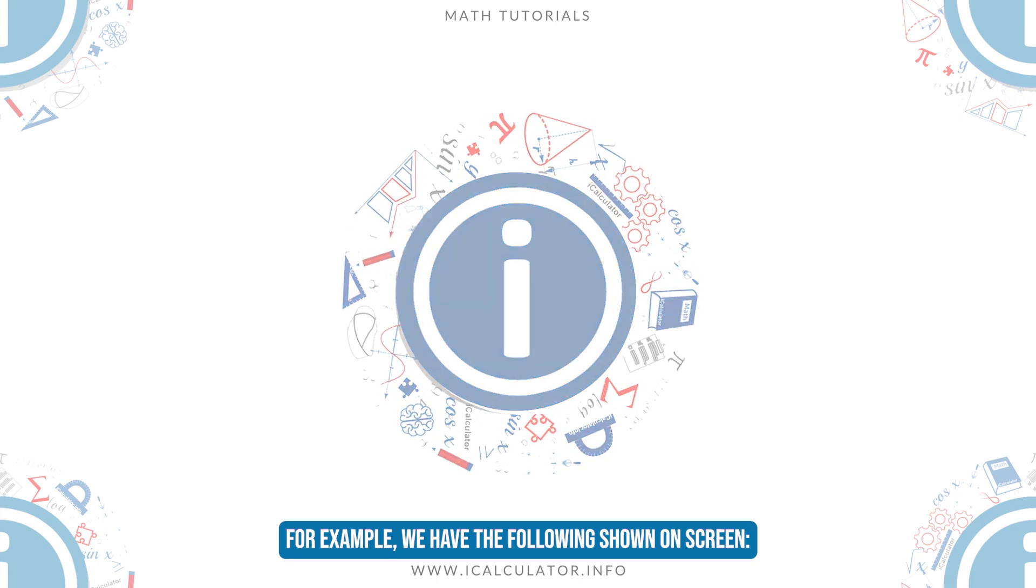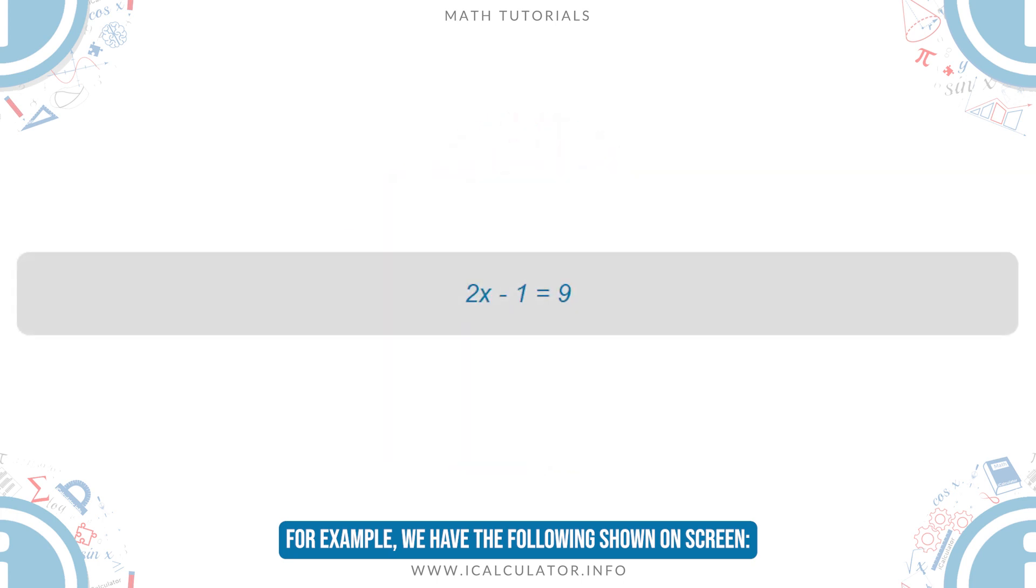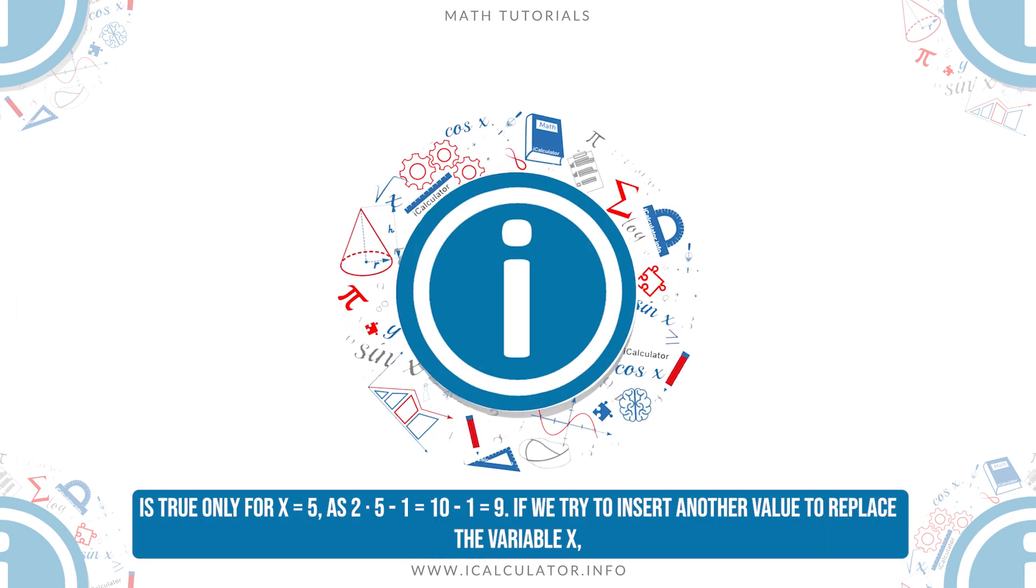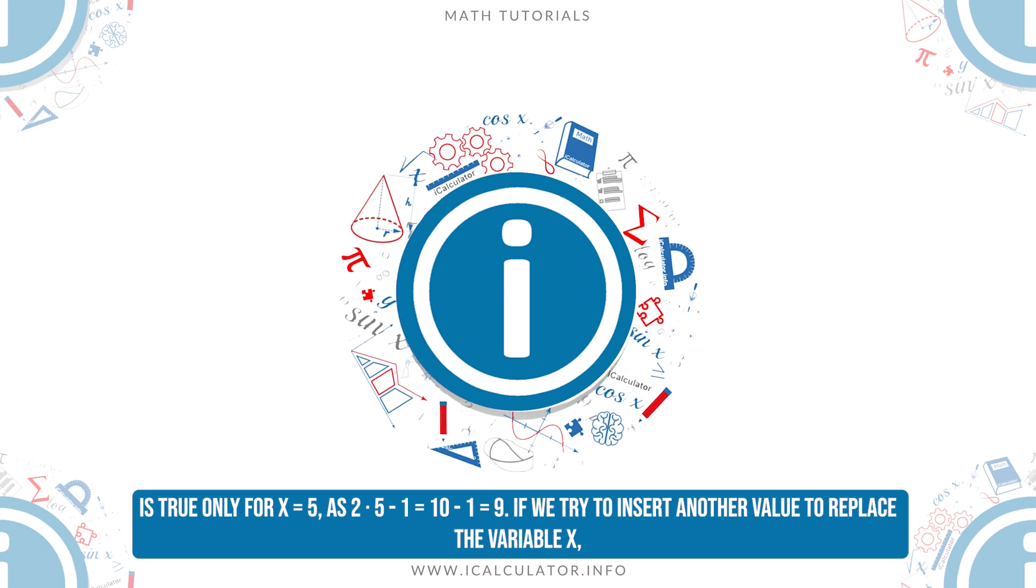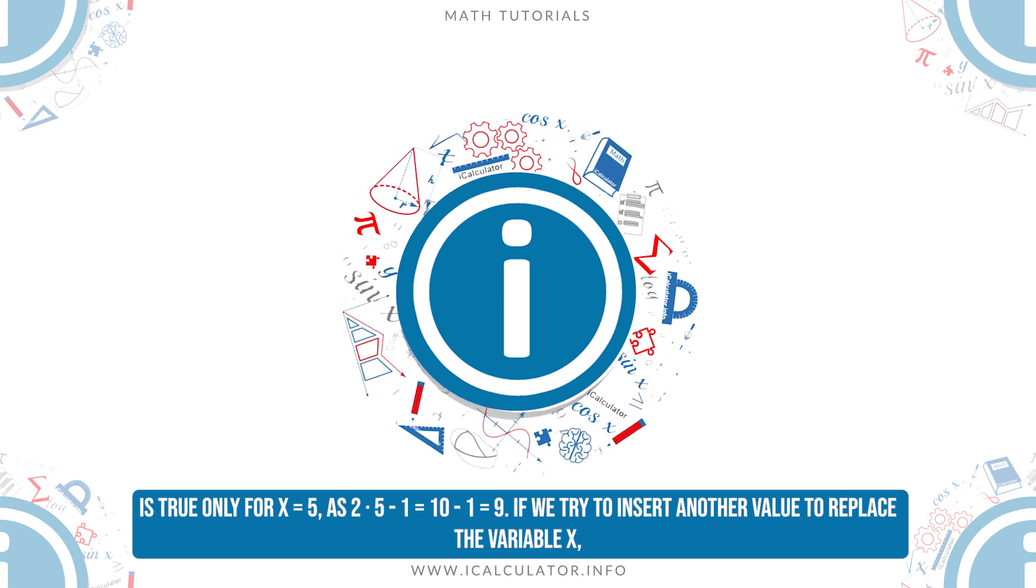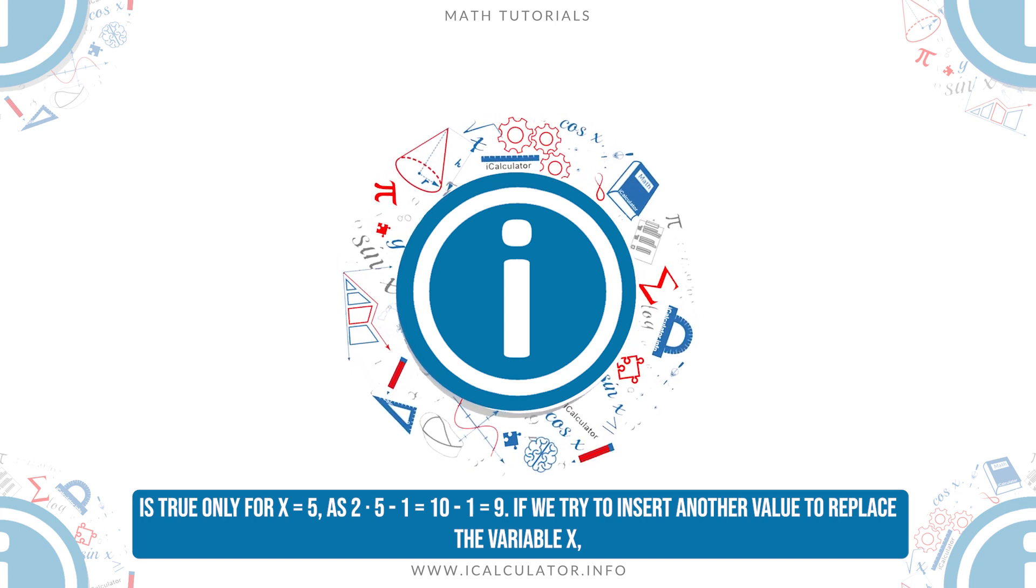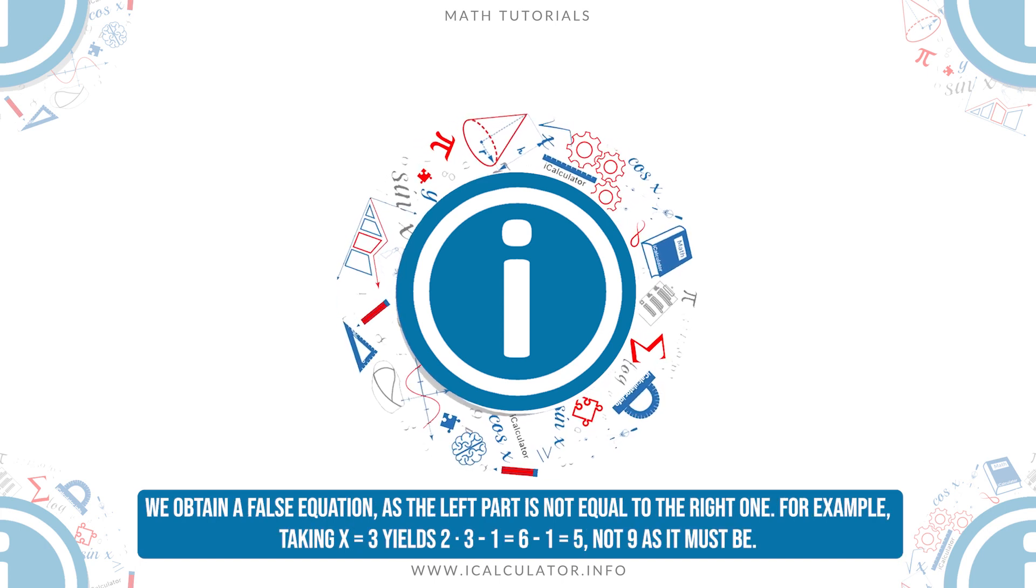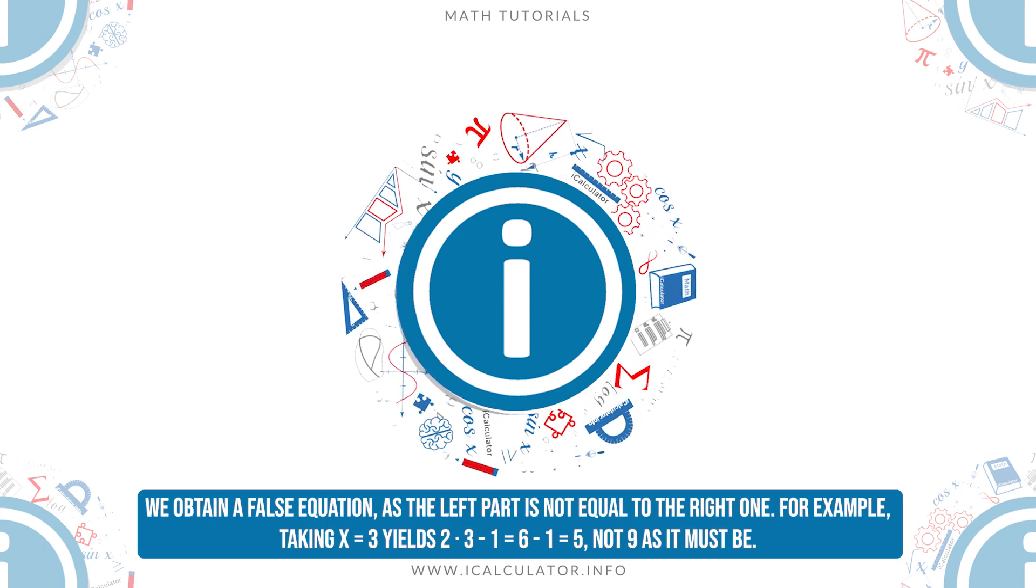For example, we have the following shown on screen. This is true only for x equals 5, as 2 times 5 minus 1 is equal to 10 minus 1 is equal to 9. If we try to insert another value to replace the variable x, we obtain a false equation, as the left part is not equal to the right one.